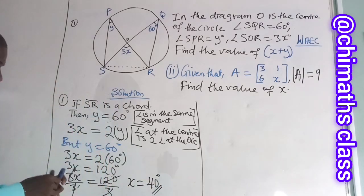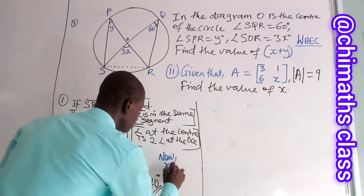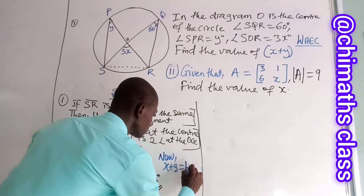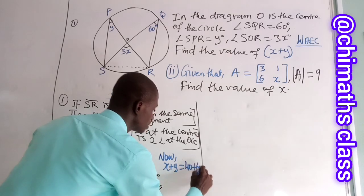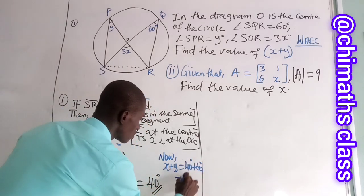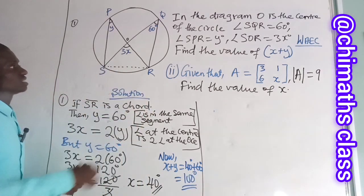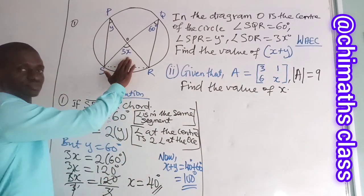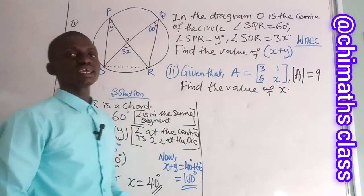Now, if X is 40 degrees, X plus Y is equal to, our X is 40 plus 60 degrees, which is equal to 100 degrees. Therefore, the value of X plus Y in this diagram is equal to 100 degrees.